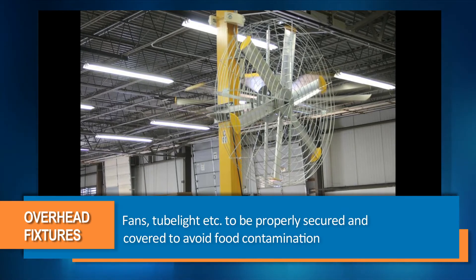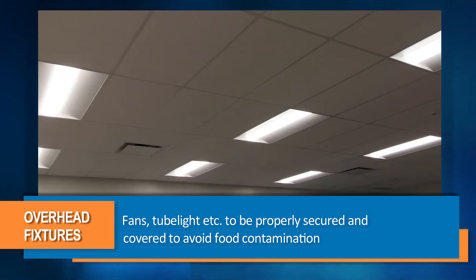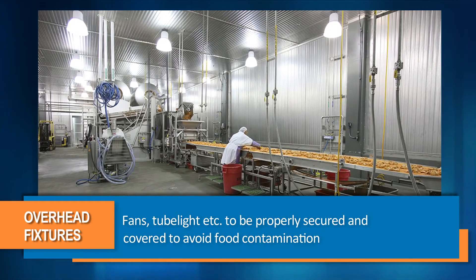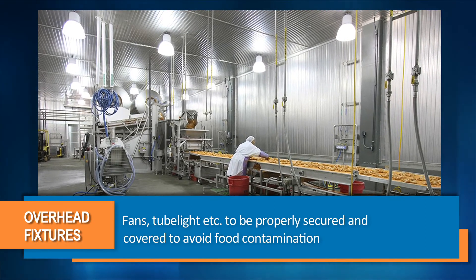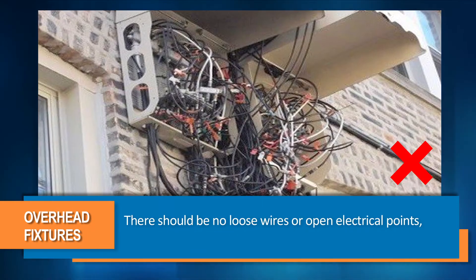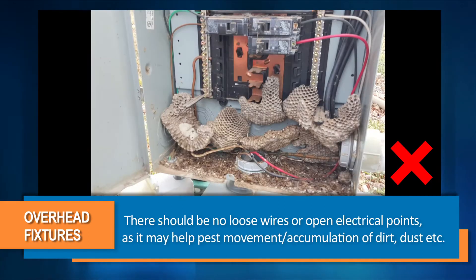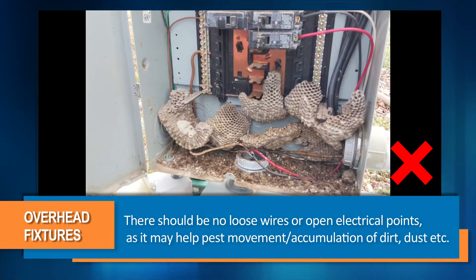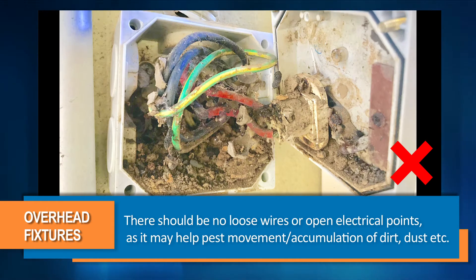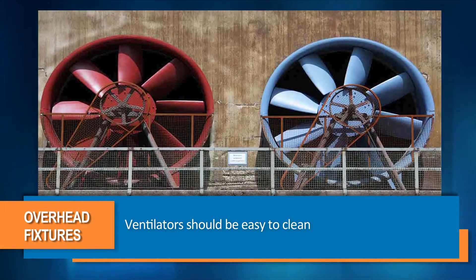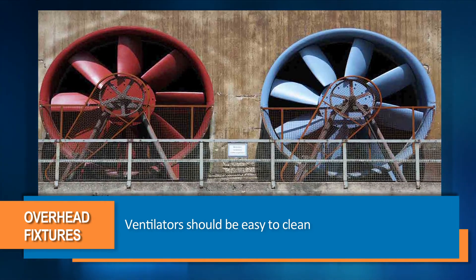All overhead fixtures such as fans, tube lights, etc. shall be properly secured and covered to avoid contamination of food. There should be no loose wires or open electrical points, as these may help in pest movement or accumulation of dirt and dust. Ventilators used for natural ventilation should be easy to clean.